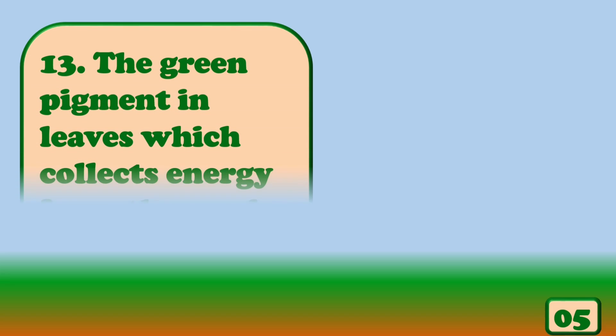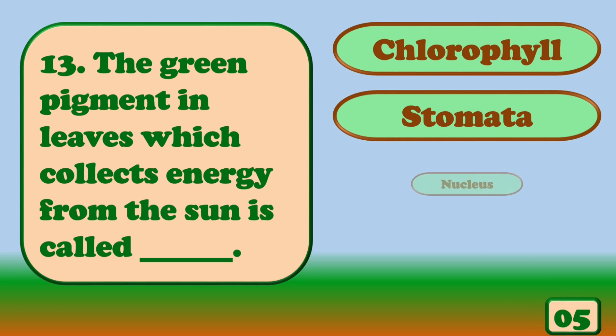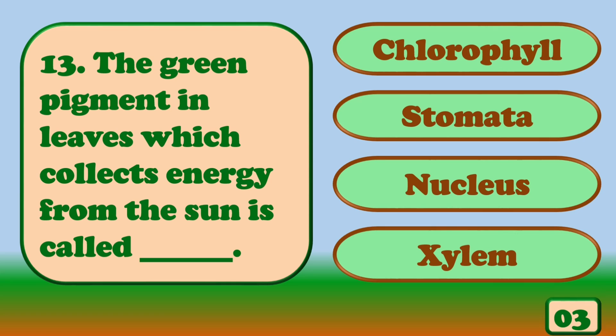The green pigment in leaves which collects energy from the sun is called chlorophyll.